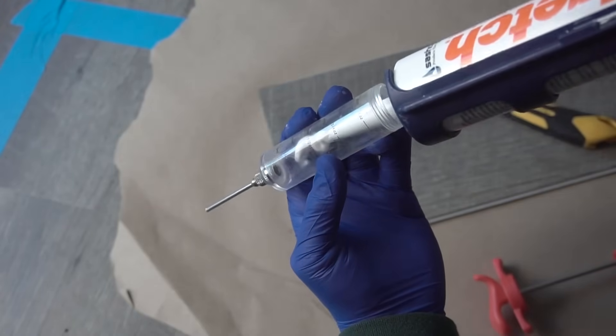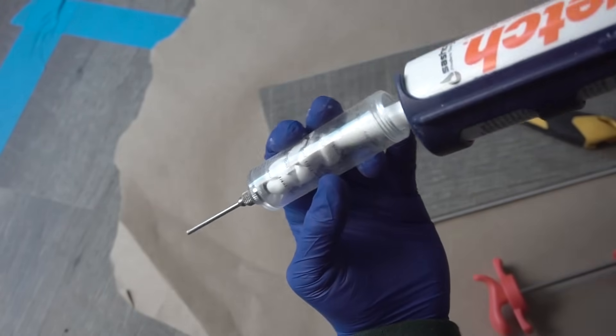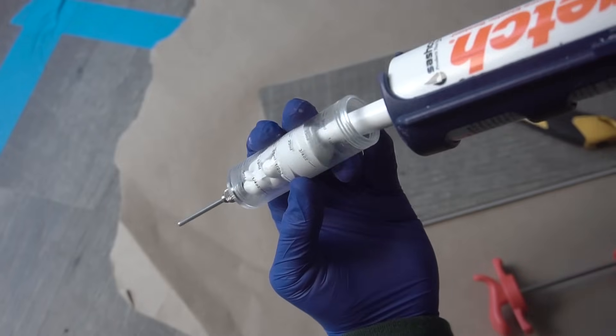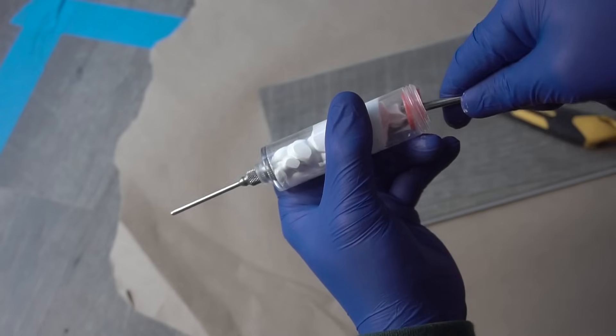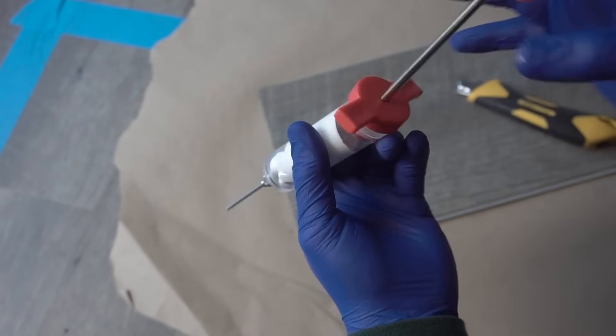Now what you're going to do is you're going to cut off the top of the caulking and just inject it inside the syringe. You don't want to overfill this because it's going to be harder to close later on. Just fill it about three quarters full.